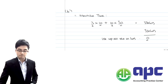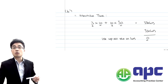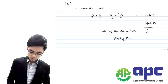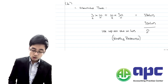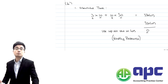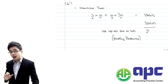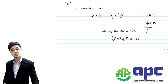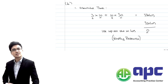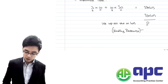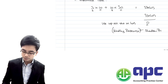Since we use up all 330 machine hours, machine time is simply the binding resource. This means if we need even one additional machine hour, we might have to buy another machine or outsource the work. The premium we're willing to pay for that additional capacity is called the shadow price, which we'll calculate later.